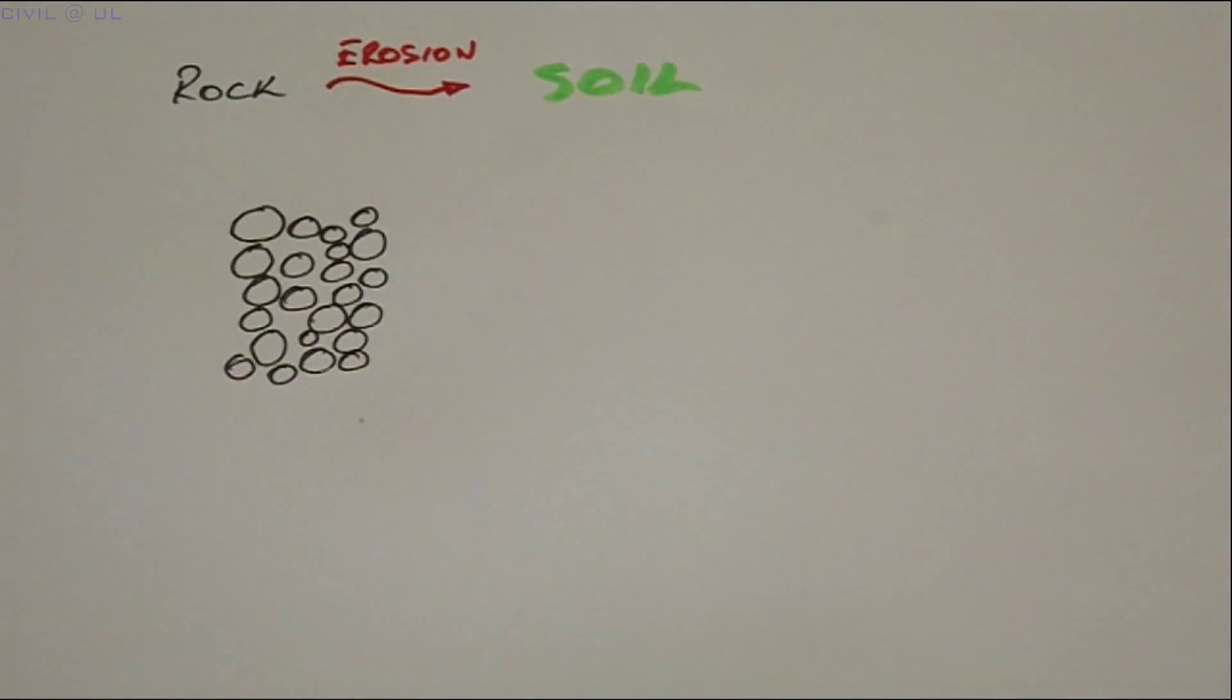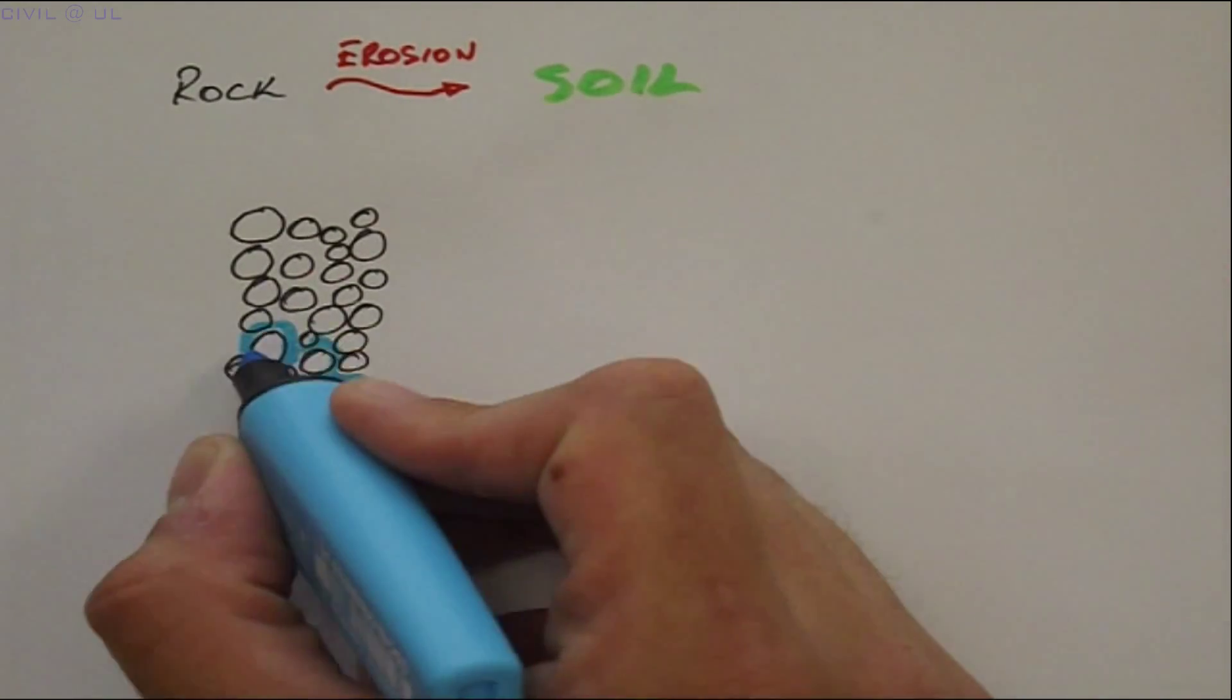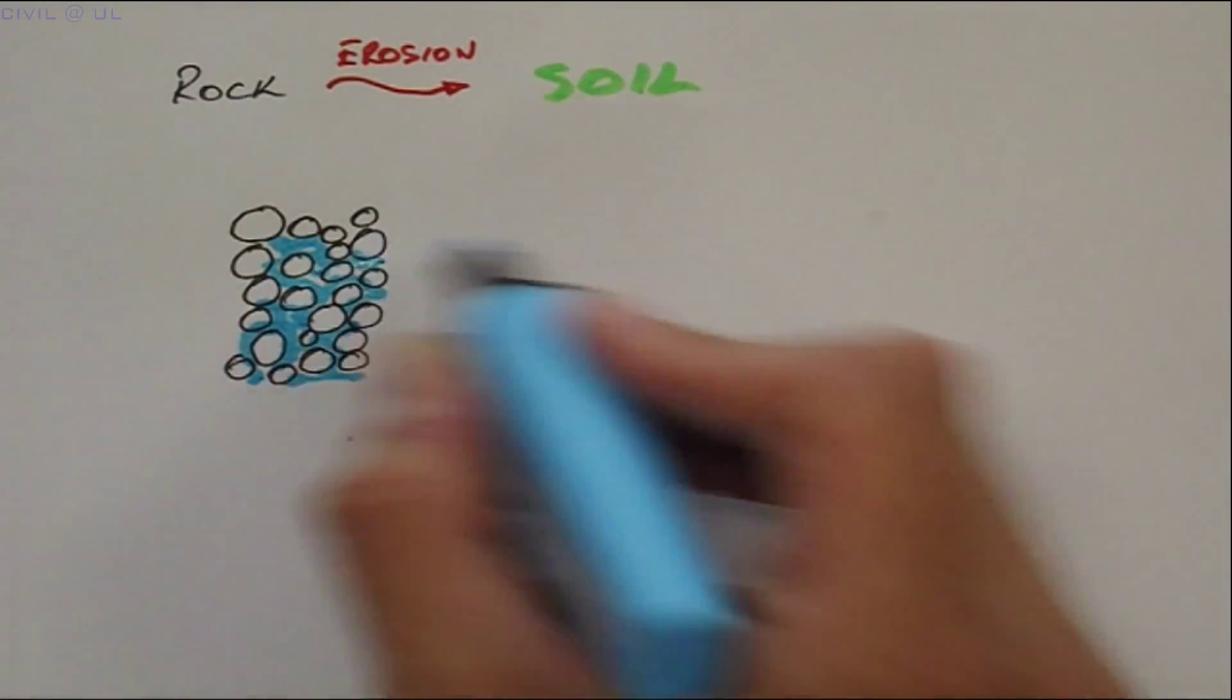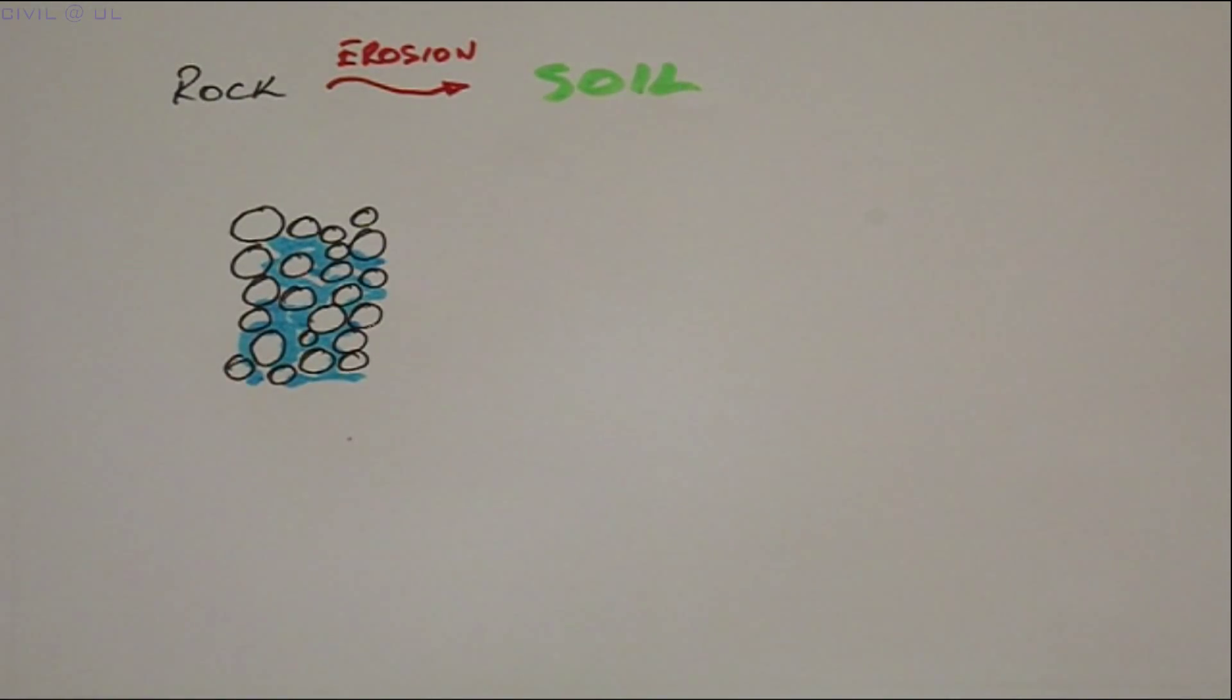The void space that exists between the particles can be filled with air or water, or a combination of both. For this reason, soil is often referred to as a three-phase material.